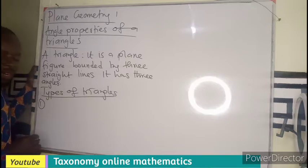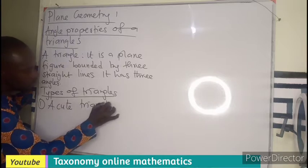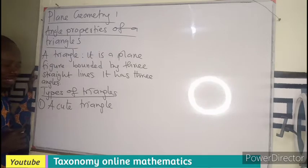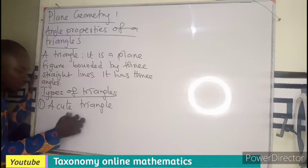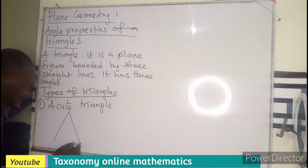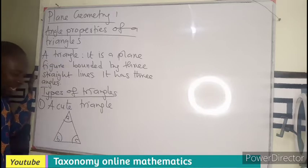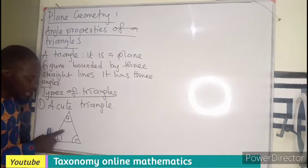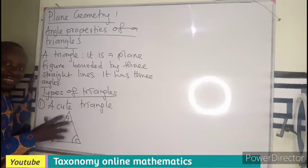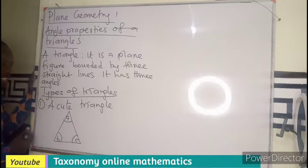The first type of a triangle is an acute triangle. An acute triangle is a triangle that has all its interior angles less than 90 degrees. So if we have angles A, B, C — say 75, 45, and 35 — if all the angles that sum to give us 180 are each less than 90, we call that an acute triangle.